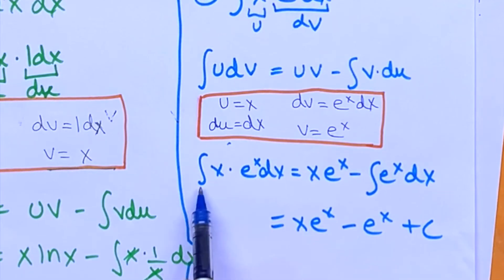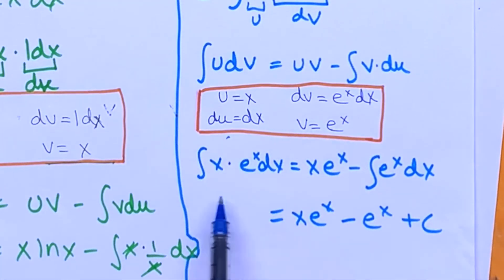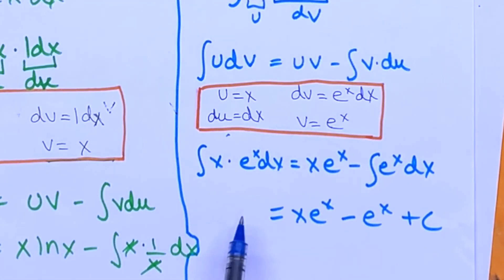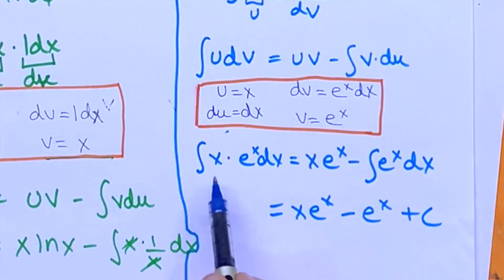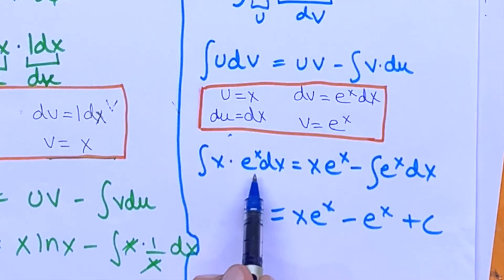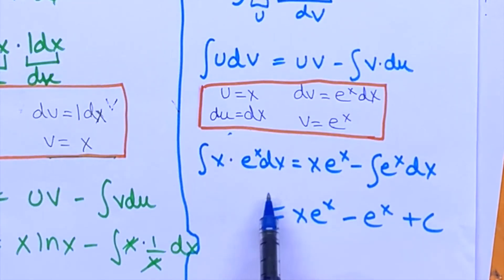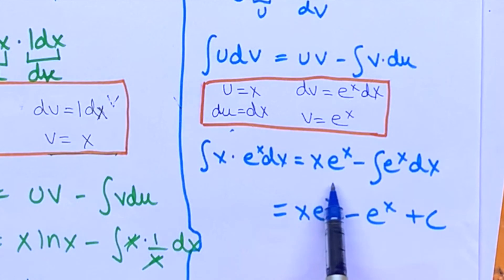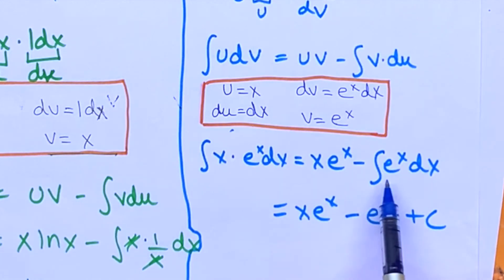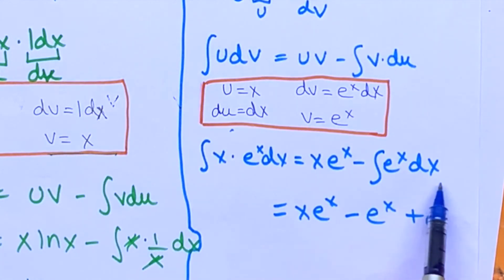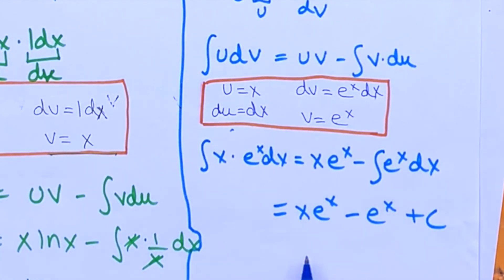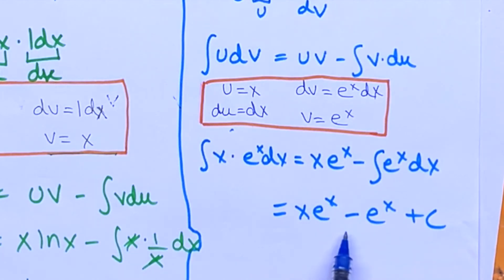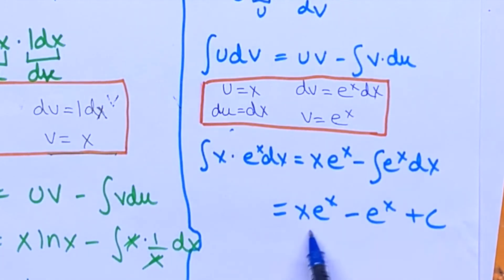So we just put these values into the formula and we get the integral of x times e to the power x dx is equal to x times e to the power x minus the integral of e to the power x dx. This gives us x times e to the power x minus e to the power x plus c.